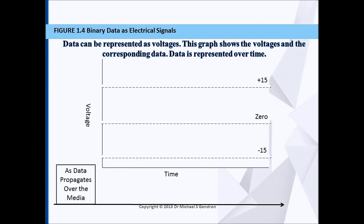As data propagates over the media, the sending host divides the data into time slots. In our example, we will not be using any compression, but this will be a simple representation of ones and zeros using voltage.